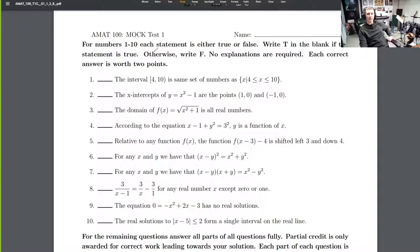The instructions read for numbers one through ten, each statement is either true or false. Write true or T in the blank if the statement is true, otherwise write F for false. No explanations are required, so you don't need to on this mock test, there's no need to write explanations. This could be a question type on the real test too. This is a section where guessing is to your benefit. You've got a 50-50 shot at getting the question right, and when you get it right, you don't need to tell me why you're right. Each correct answer is worth two points. So this is 20 points. If I remember correctly, this test was out of 100. So this is 20% of the test.